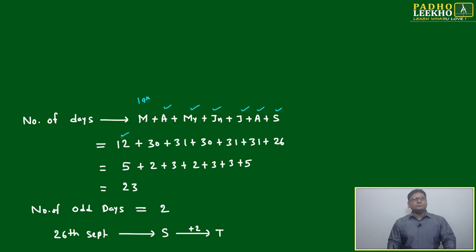Out of 31, 19 will be excluded, then 12 will be left. April is 30, May 31, June 30, July 31, August 31. For September we have to calculate 26th. The 26th will be included on this side; 19th will be excluded, 26th will be included because we have to find on the 26th.